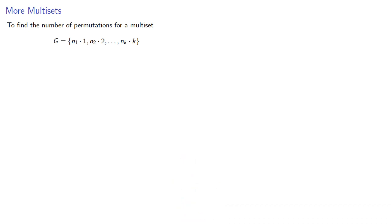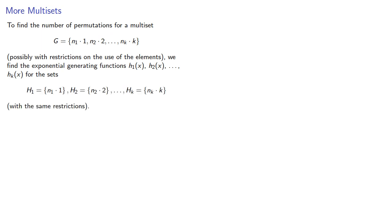To find the number of permutations for a multiset with different types of elements, possibly with restrictions on the use of the elements, we find the exponential generating functions for the sets consisting of a single type of element with the same restrictions. Then the product is an exponential generating function for the permutations on the original multiset.